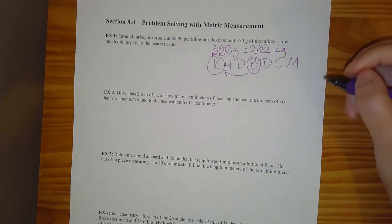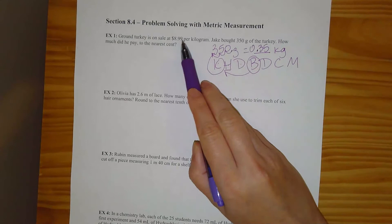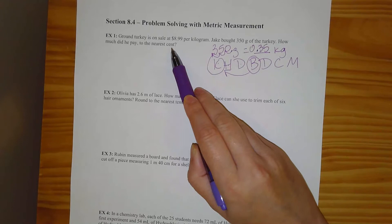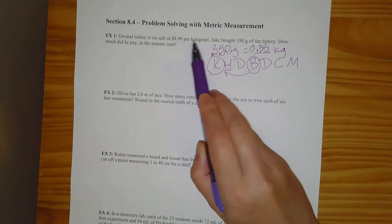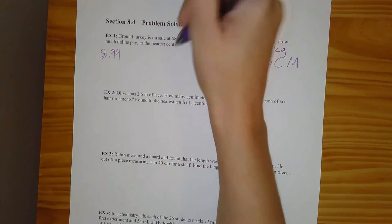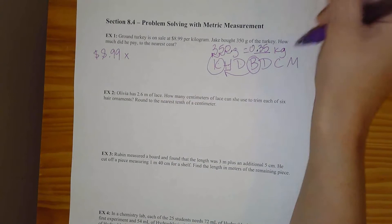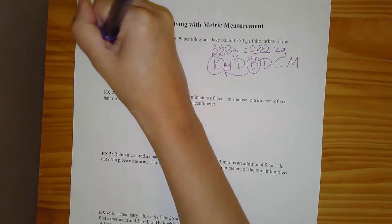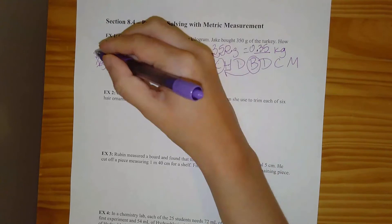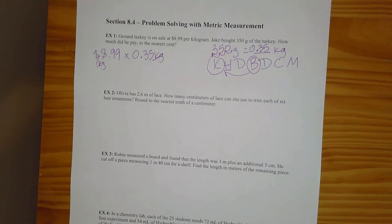Now that I'm in kilograms, I can go back to this problem. I need to know how much he paid — that's the dollar amount. The turkey is $8.99 per kilogram, so what I'm going to do is take that $8.99 per kilogram and multiply it by the number of kilograms I have, which I just figured out is 0.35 kilograms. Dollars per kilogram times kilograms — those cancel out and I'm left with dollars.